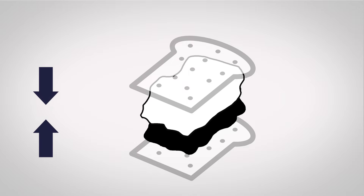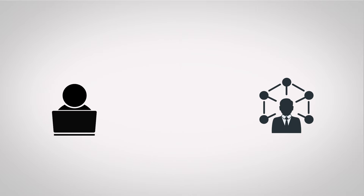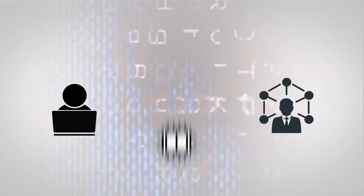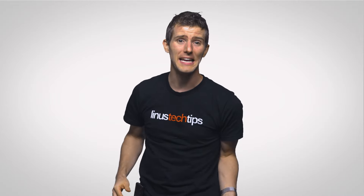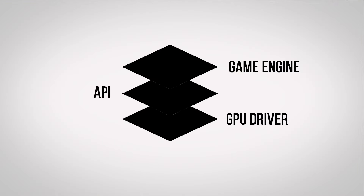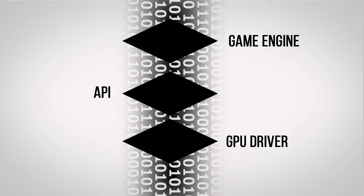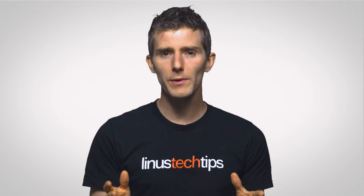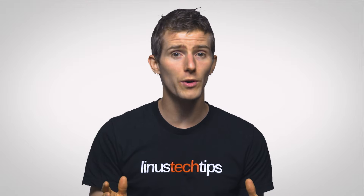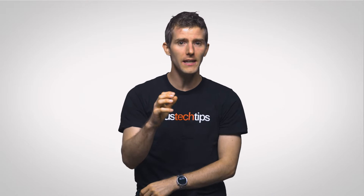Because without these layers, programmers and developers would have to code differently for every single hardware configuration on the planet, which would be impossible. Other layers sit between two different pieces of software and help them talk to each other without needing to have tons of code in common. These software layers help standardize the coding process so that programs can interface with lots of different stuff easily.